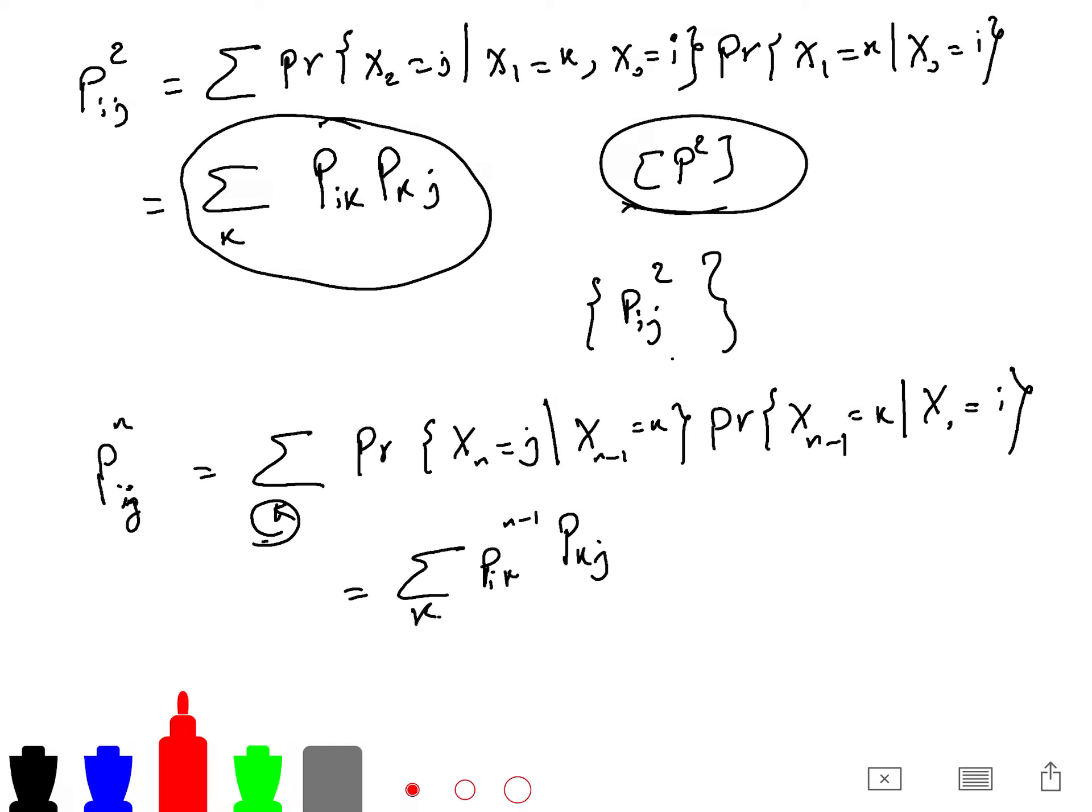And we can write it as pik to the n minus 1, pkj. So in general, the Chapman-Kolmogorov equation, we can say that p to the m plus n is equal to p to the m power of transition probability times the n's power.